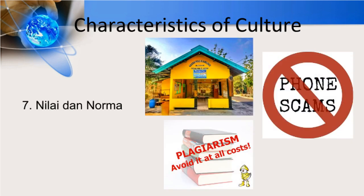The seventh characteristic of culture is about values and norms. Plagiarism is strictly forbidden in all universities in the United States, for example. Calling someone for invalid or criminal purposes is against the law. Meanwhile, in Indonesia, each community has a place called Pos Kamling, whose purpose is for security reasons.